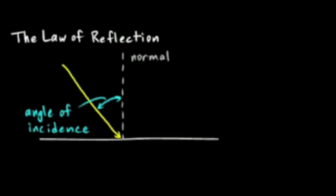So the incoming ray is the incident ray, and the angle that it makes with the surface normal is called the incident angle, or the angle of incidence. And then the ray hits the surface and it bounces off. And this angle here is called the angle of reflection.